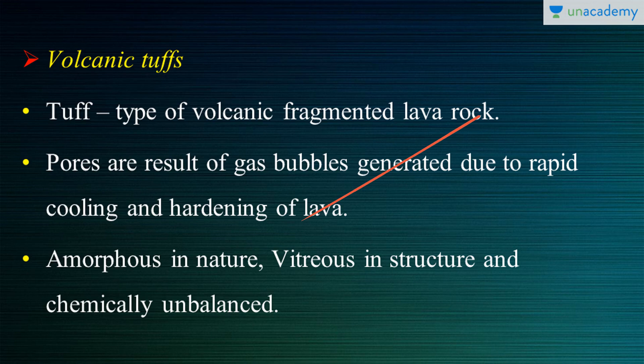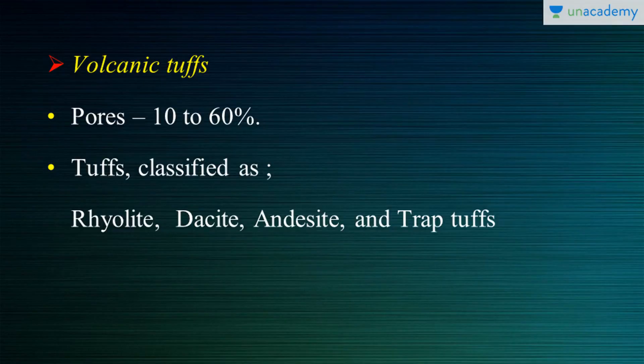If you look at the microstructure of this volcanic tuff, it can be seen that they are amorphous in nature — they can change shape. They are vitreous in structure, which means that they are glassy and smooth, with glass-like properties. And they are chemically unbalanced. The pore proportions vary in the volcanic tuff from 20 to 60 percent. Some of the major classifications of tuffs are rhyolite, dacite, and trap tuffs. That's what volcanic tuffs are all about.